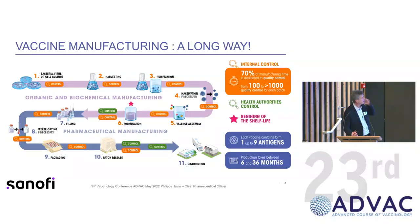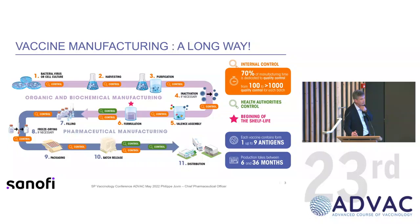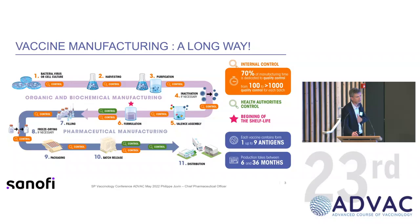This is then followed by inactivation, if necessary. A key test is done afterwards to confirm that inactivation was perfectly completed. Then we obtain this purified, inactivated antigen, and we can start to assemble together the different valences of the vaccine.